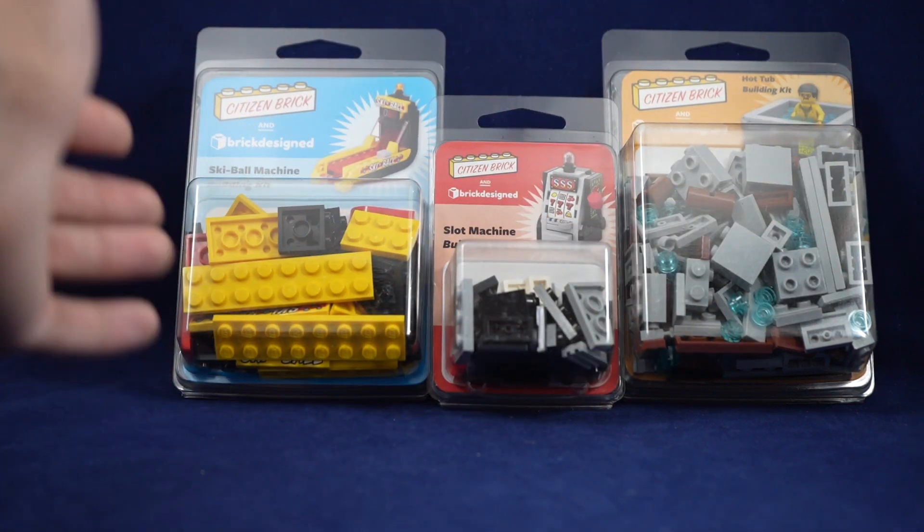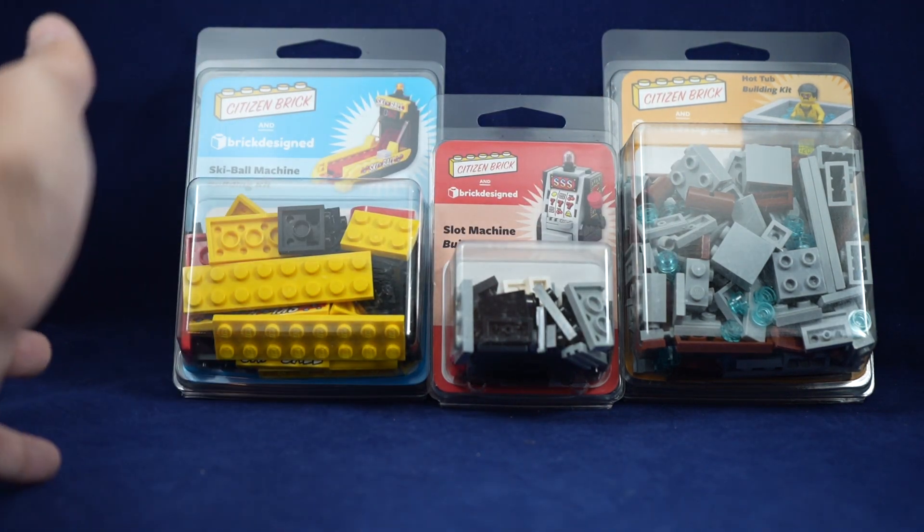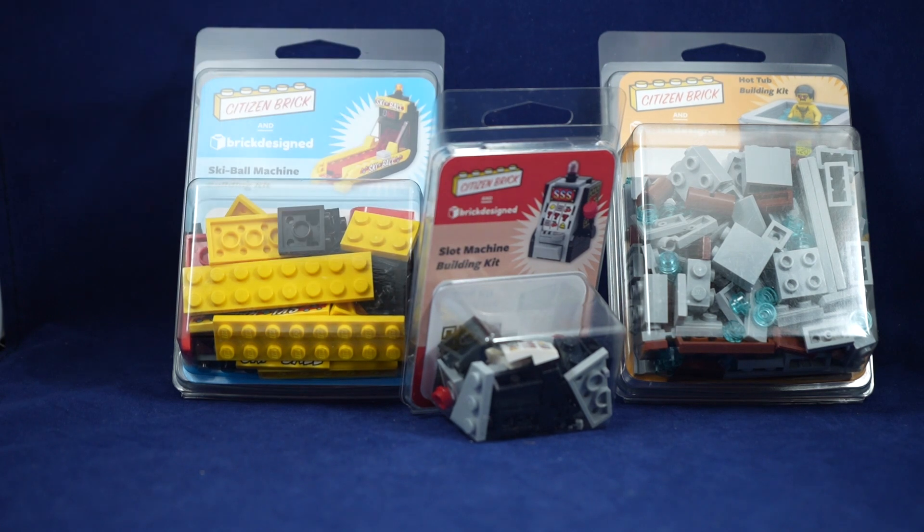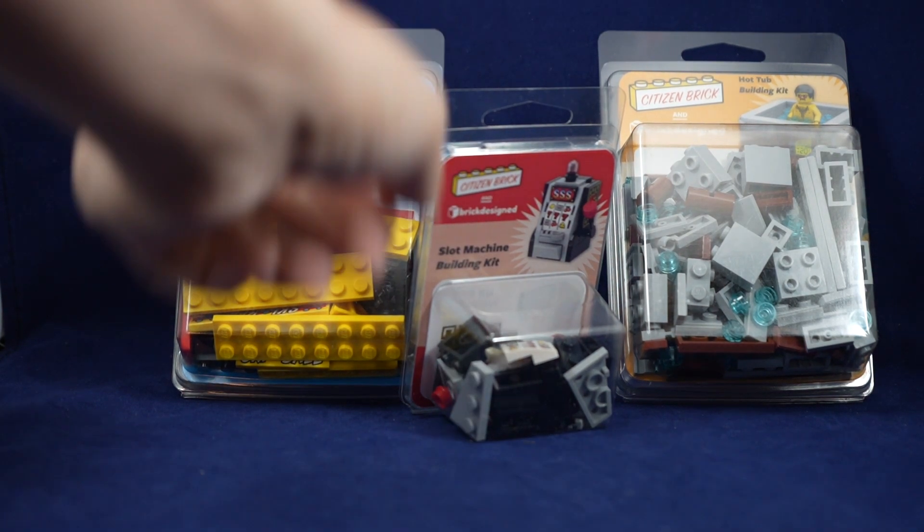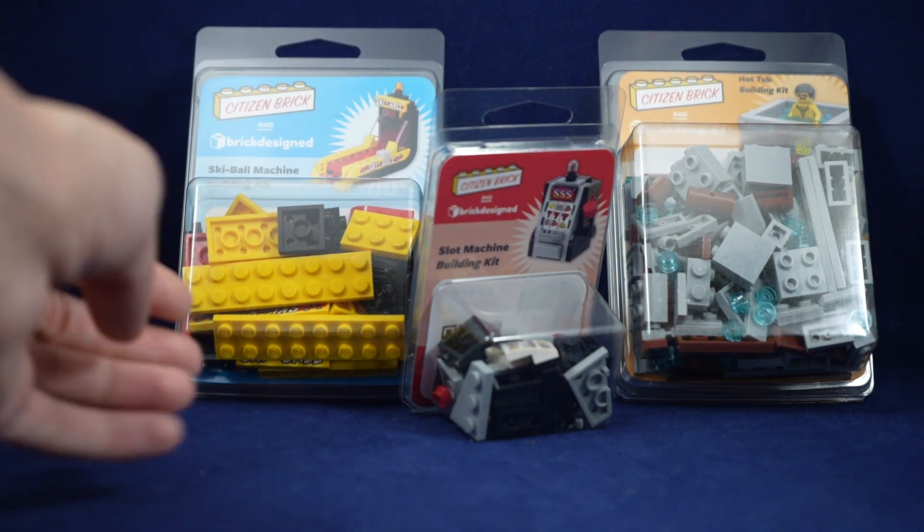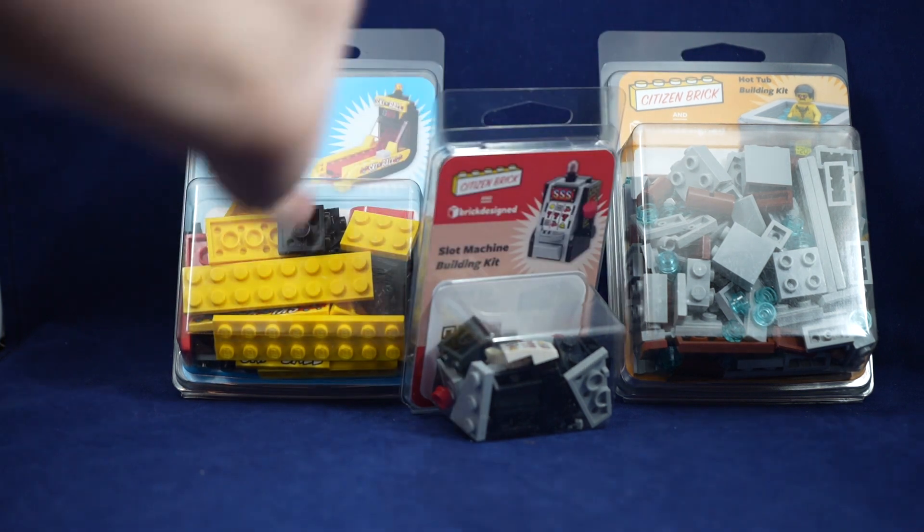For the most part, Citizen Brick really only has designed bigger sets so it's kind of nice to see these smaller ones that are a little bit more affordable and even some of them contain some cool minifigure parts like you can see in the hot tub. It's kind of cool to see that they're in three different packaging sizes so it'd be kind of a hint I guess that they'll plan on doing more of these different builds and different sizes.